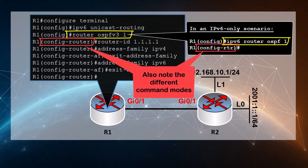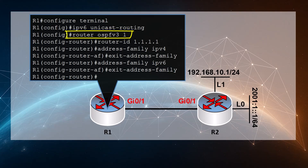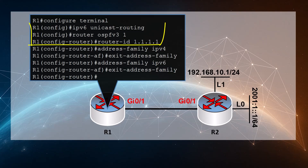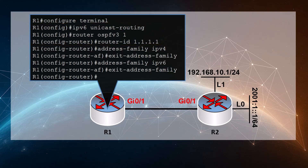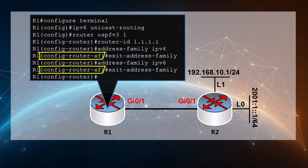That previous command enables OSPF version 3 only for IPv6, where address families cannot be used. We need this new command so that address families can be configured. Then we configure the router ID. Once we issue these commands, OSPF is now running but it's not enabled for IPv4 or IPv6 specifically — that has to be done with the address family commands.